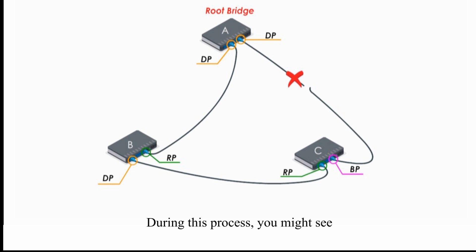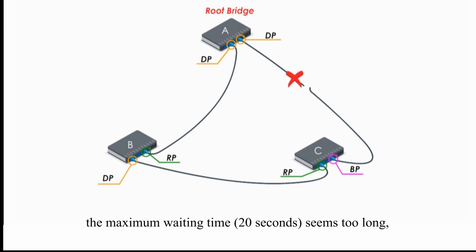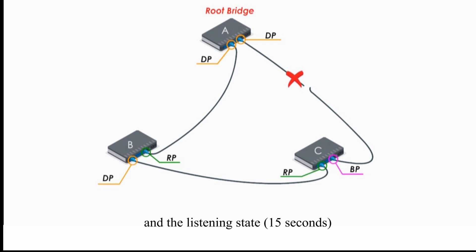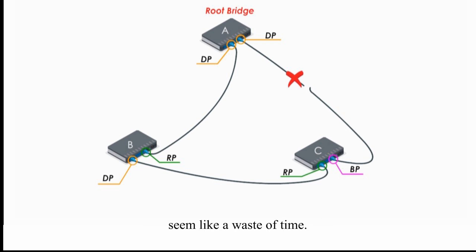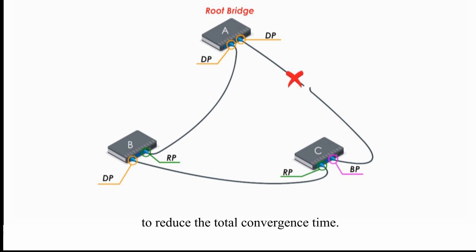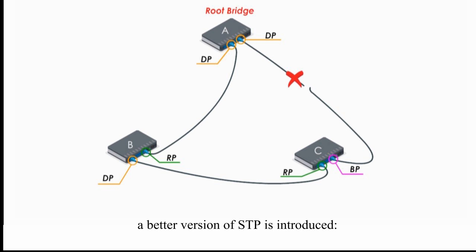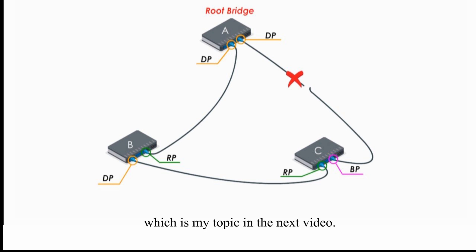During this process, you might notice that the maximum waiting time seems too long, and the listening and learning states seem like a waste of time — a new version of STP is much needed to reduce the total convergence time. Well, you are right. As the network becomes larger and larger, a better version of STP is introduced: Rapid Spanning Tree Protocol, which is my topic in the next video.